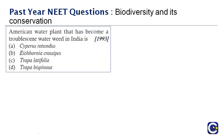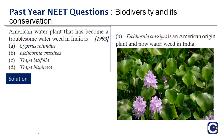Next question: the American water plant that has become a troublesome water weed in India is blank. The right answer is option B — Eichhornia crassipes. It is of American origin but is now commonly seen as a weed in India, growing on the surfaces of lakes and other water bodies.